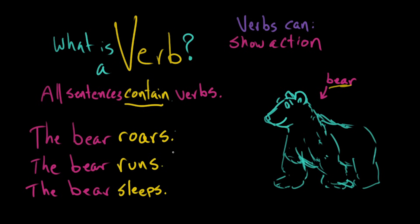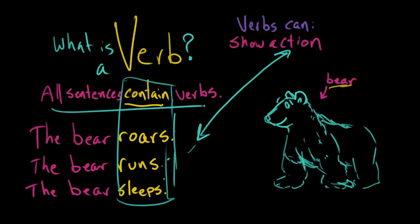Now, each one of these words in yellow is a verb. Each one of them is an action, and this is the first thing that verbs can do. Verbs can show action in sentences, and in fact, all sentences must contain verbs. You can learn anything. David out.